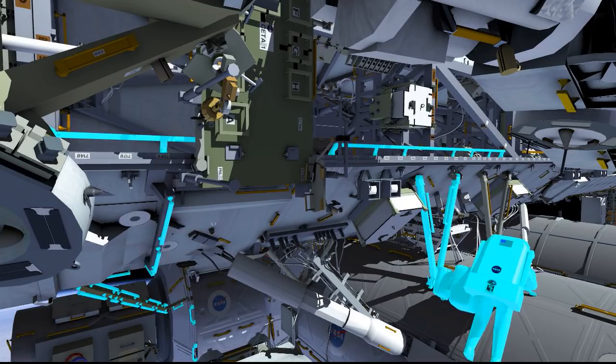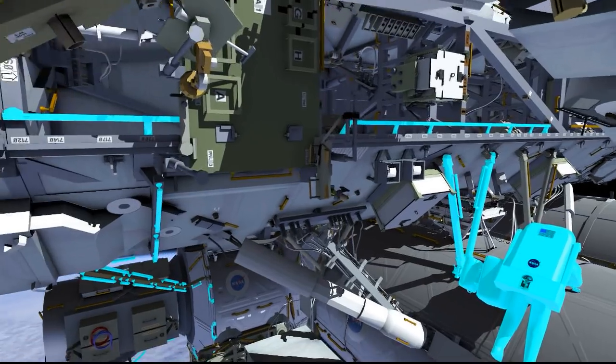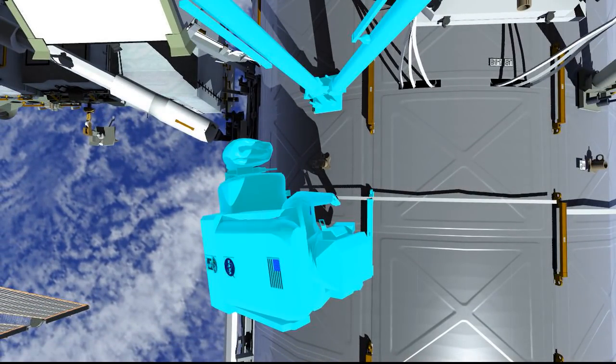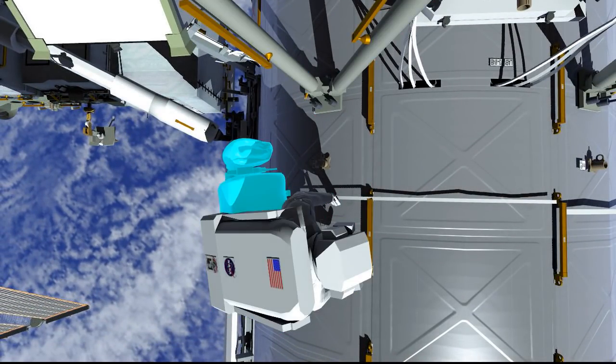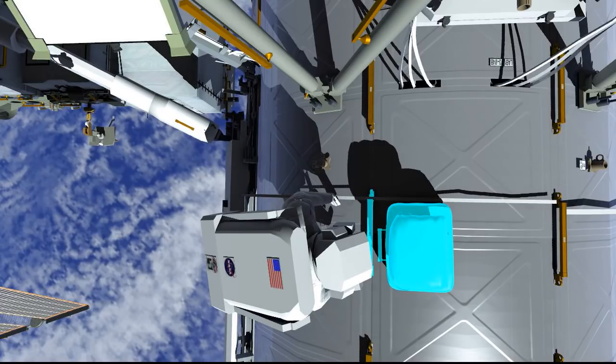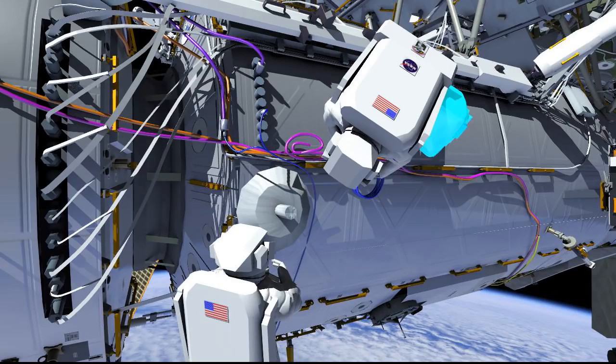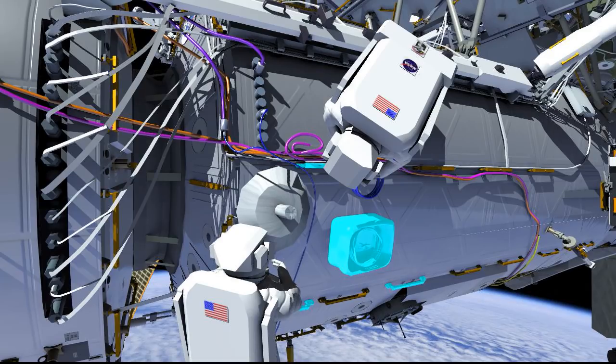After going over the top of the lab, EV2 will temp stow the bag on the zenith side of the U.S. laboratory. From here, both will converge on the port side forward end of the U.S. lab, where they've got a MMOD or micrometeoroid debris shield that they'll release.